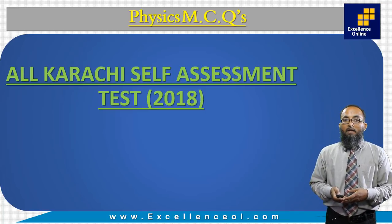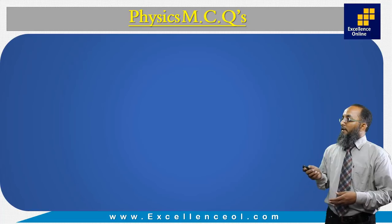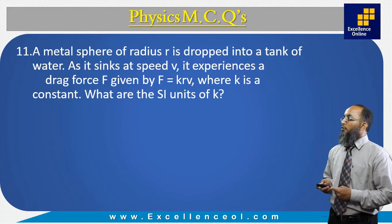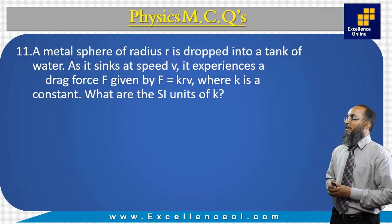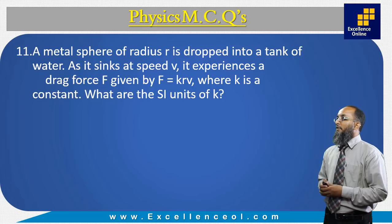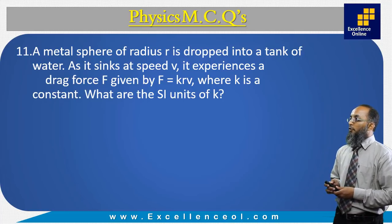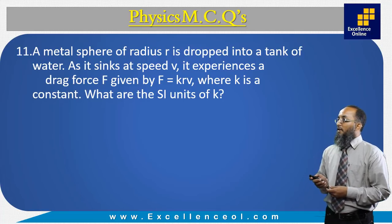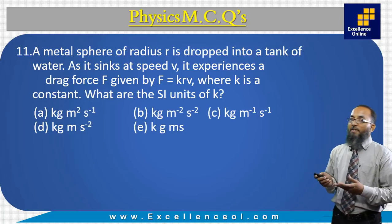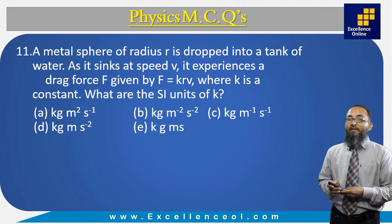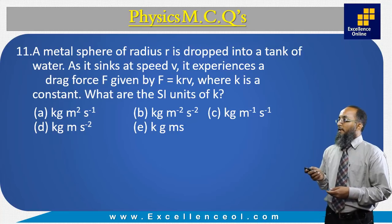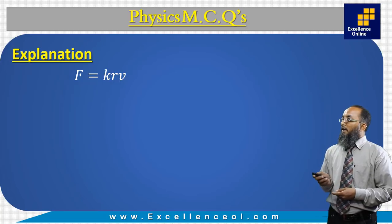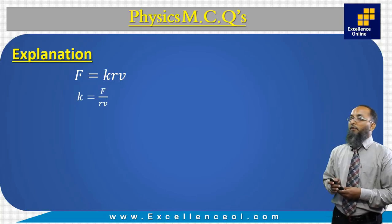The first question: a metal sphere of radius r is dropped into a tank of water. As it sinks at a speed v, it experiences a drag force F given by F = KRV, where K is a constant. What are the SI units of K? To find the correct answer, we take the formula F = KRV and arrange it for K: K = F upon RV.